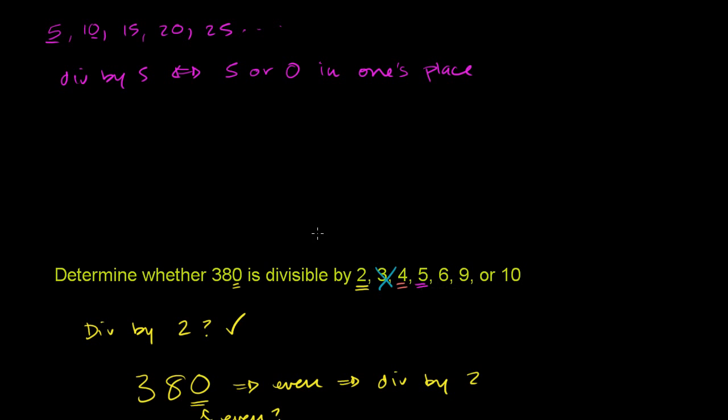Now let's think about the situation for 6. So to be divisible by 6, you have to be divisible by the things that make up 6. Remember, 6 is equal to 2 times 3. So if you're divisible by 6, that means you're divisible by 2 and you are divisible by 3. If you're divisible by both 2 and 3, you will be divisible by 6. Now 380 is divisible by 2, but we've already established that it is not divisible by 3. If it's not divisible by 3, it cannot be divisible by 6. So this gets knocked out. We are not divisible by 6.